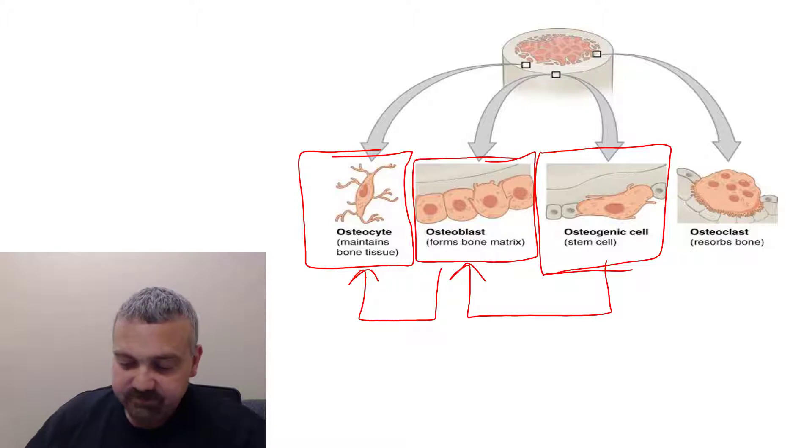So if you think about it, we're looking at four different bone cells here. We're really looking at two. The osteoprogenitor cell becomes an osteoblast, which paints itself into a corner, becoming an osteocyte.